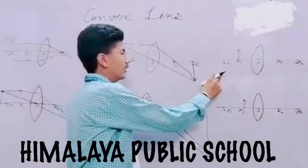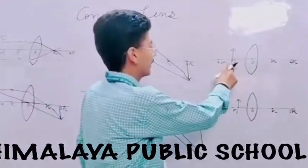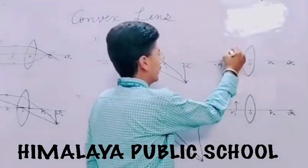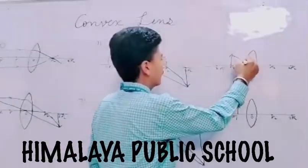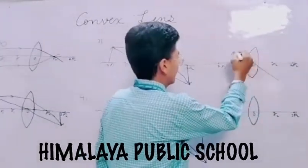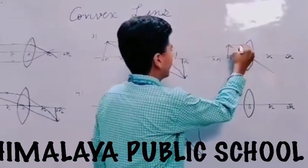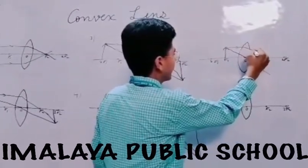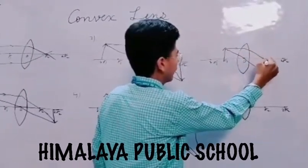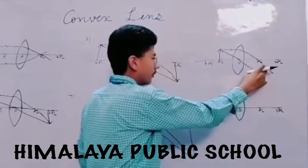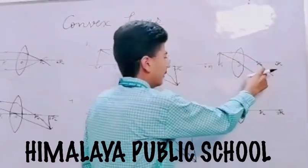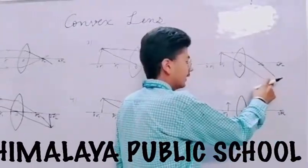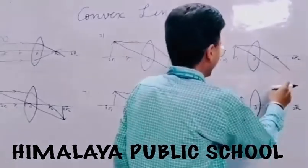Fifth condition is when the object is placed at the focus. The first ray is passing through the optical center and the second ray is coming parallel to the principal axis. After refraction it will pass through the focus. As you can see both rays are parallel to each other, so both rays will meet at infinity.